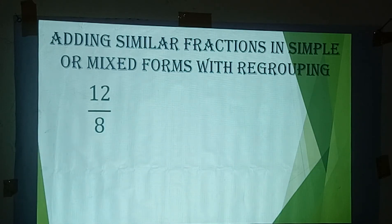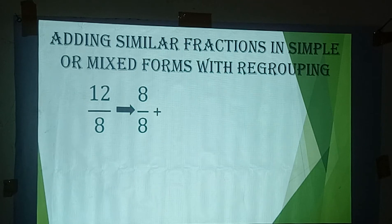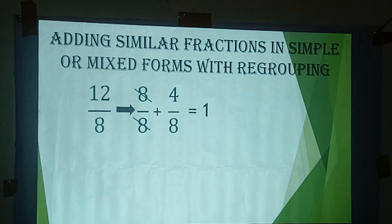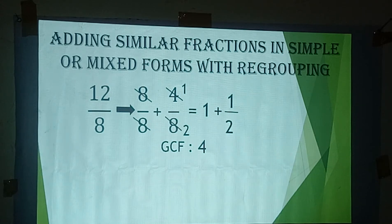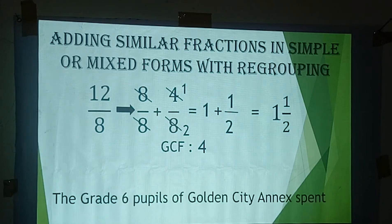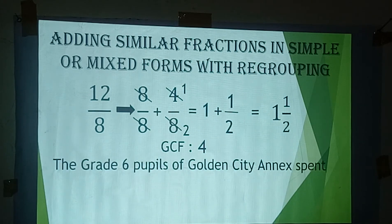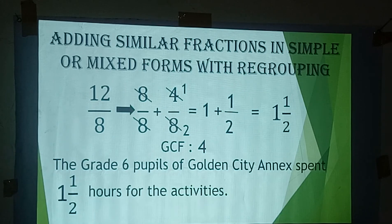Let me explain why it is 1 and 1 half. We regroup 12 over 8 as 8 over 8 plus 4 over 8. Then 8 divided by 8 equals 1. The GCF of 4 and 8 is 4; 4 divided by 4 is 1 and 8 divided by 4 is 2. So 1 plus 1/2 equals 1 and 1 half. Therefore the Grade 6 pupils spent 1 and 1 half hours for the activities.